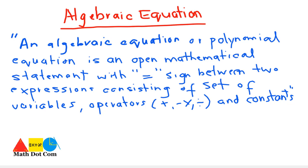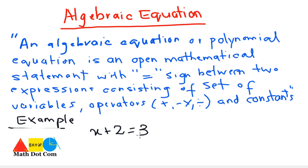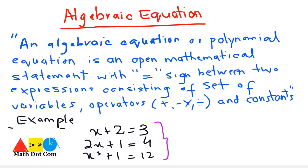For example: x plus 2 equals 3, 2x plus 1 equals 4, and x cubed plus 1 equals 12. All of these are algebraic equations.